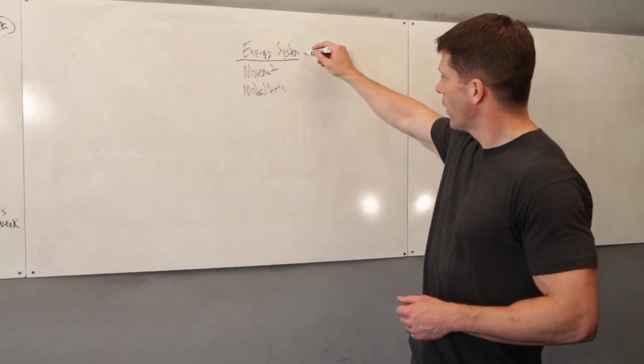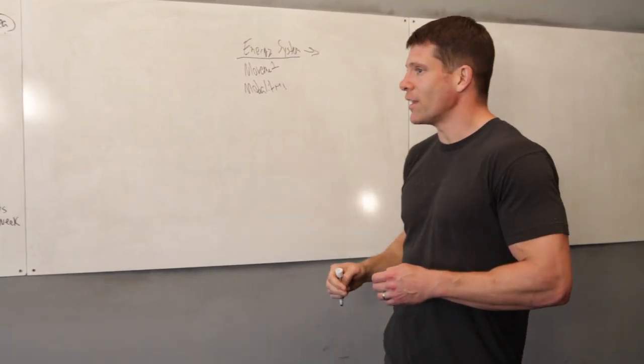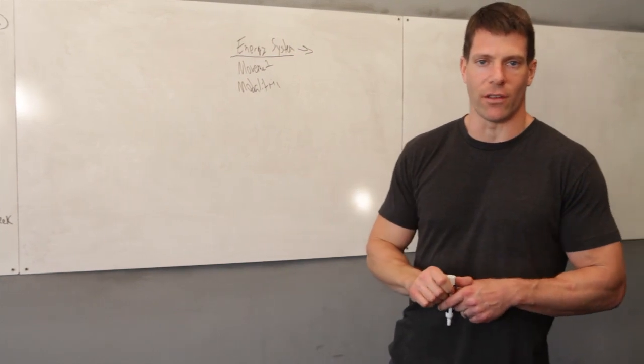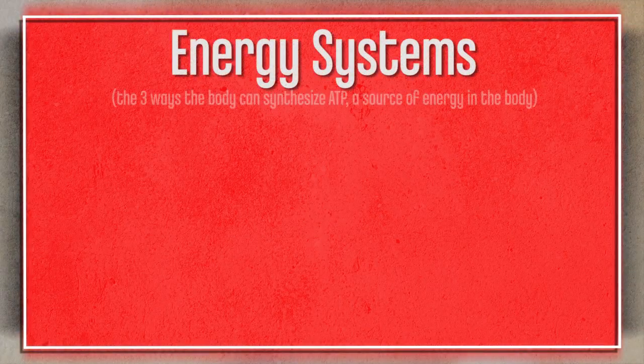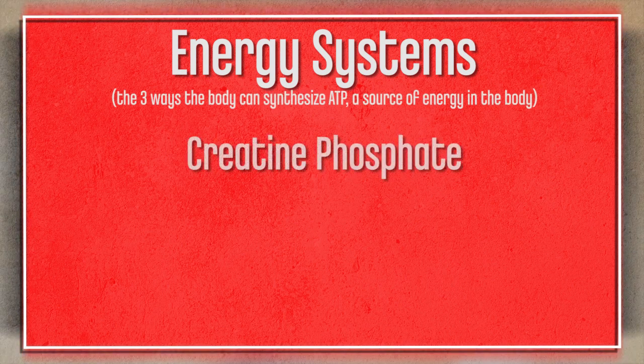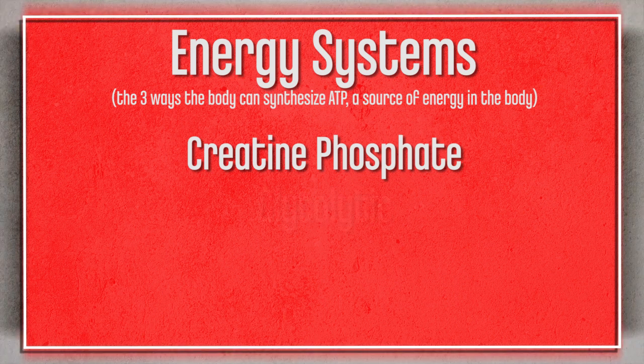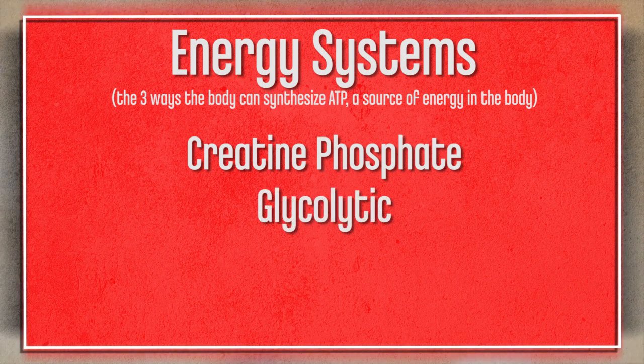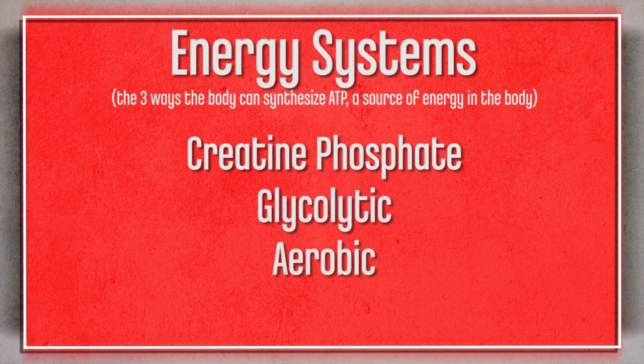With the energy system piece in mind, you've got three basic energy systems for all human beings. These are all used all the time, but you're predominantly using one in any given moment. We've got the creatine phosphate, then you've got the glycolytic, and we have the aerobic system.